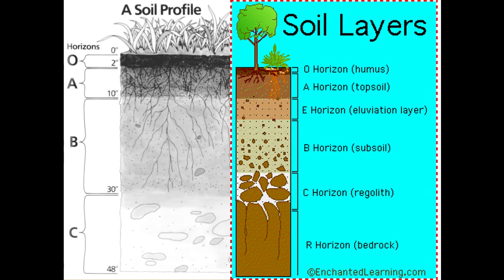Some more drawings of soil profiles. On the left would be maybe a young prairie: small O horizon, A, B, C. On the right, we see root infiltration through the O and A horizons, our E horizon — our eluviated layer, our leached area — down into our B horizon where we start to see more unweathered material, then transition into our C, and then our R.